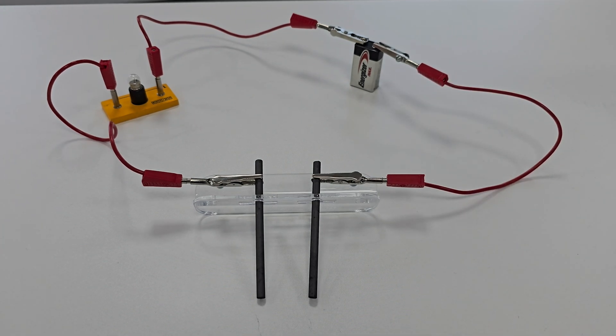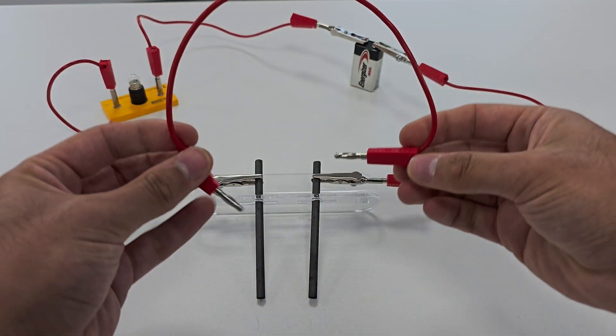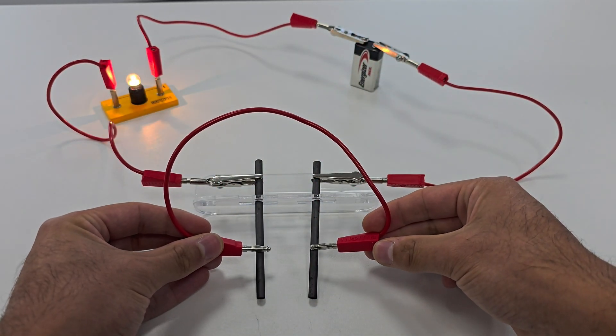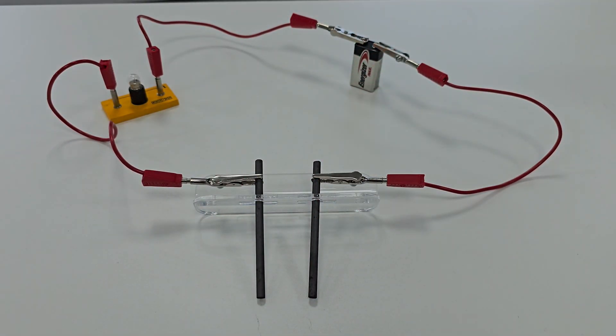To confirm the setup works I'll first bridge the gap between the graphite electrodes with a conductor. Here's a wire, notice how the light bulb lights up.